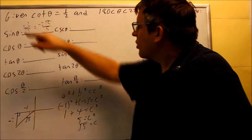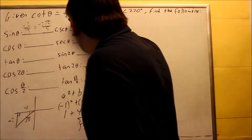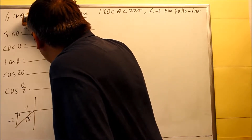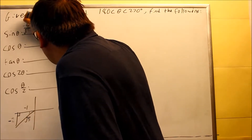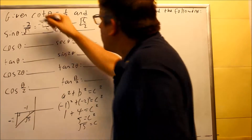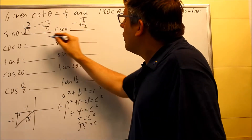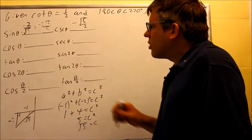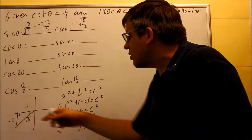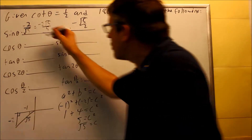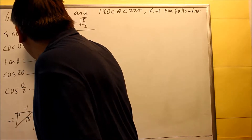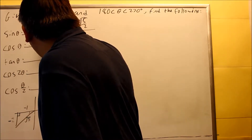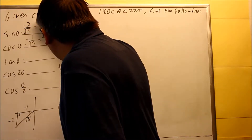For cosecant, I just flip the sine value. So it's negative radical 5 over 2. Next, cosine theta — cosine is adjacent over hypotenuse — that's negative 1 over square root of 5. Rationalizing gives negative radical 5 over 5.